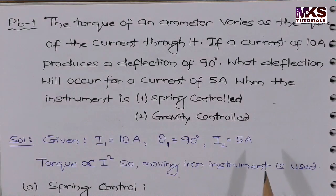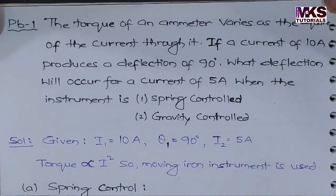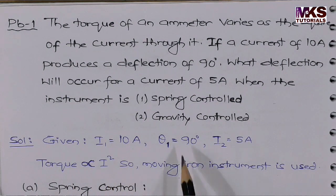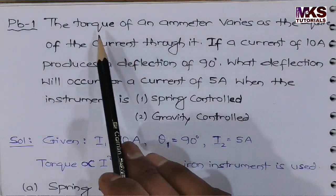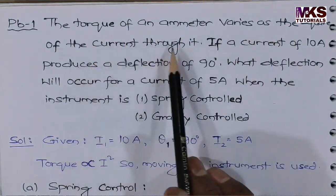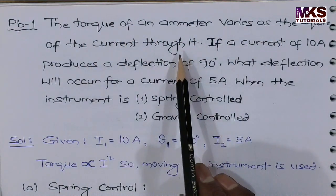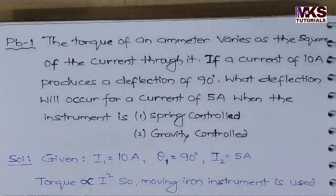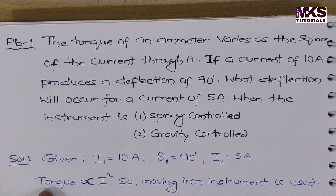This is a moving iron instrument. For a moving iron instrument, torque is directly proportional to I². The torque varies as the square of the current. So, torque is directly proportional to I².